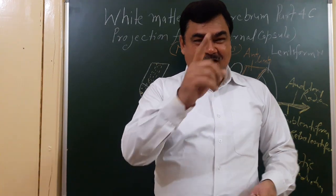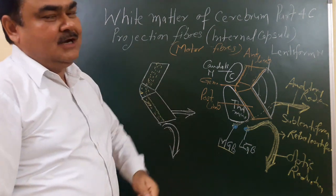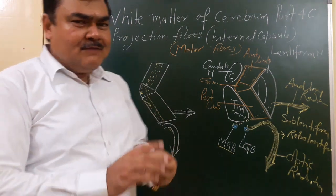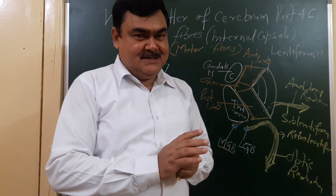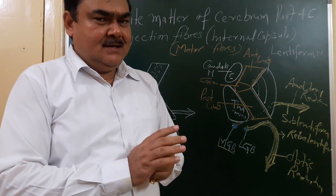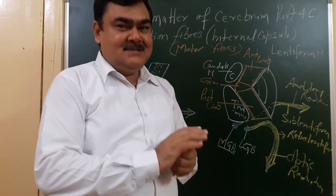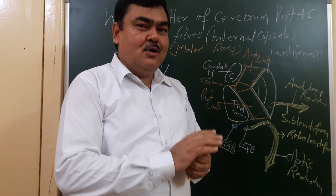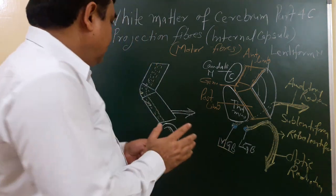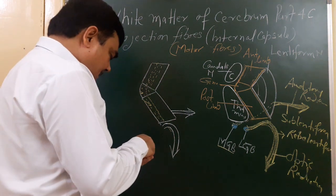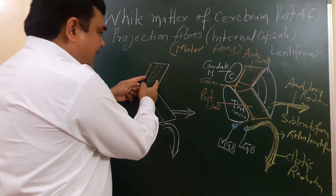Now we'll discuss the motor fibers passing through the internal capsule. Motor fibers include corticocontine fibers, corticothalamic fibers, corticorubral fibers, and corticoreticular fibers. We'll discuss these here. This is the anterior limb, where the corticocontine fibers are located.